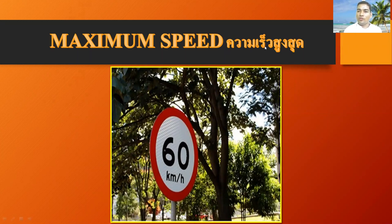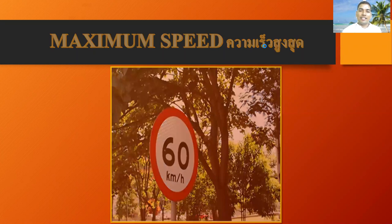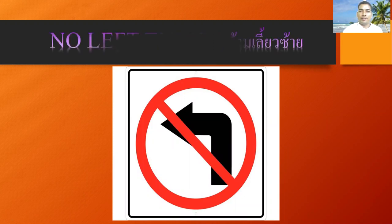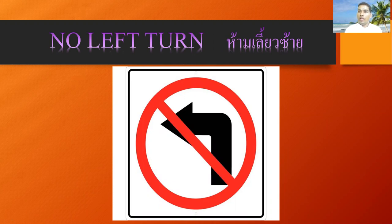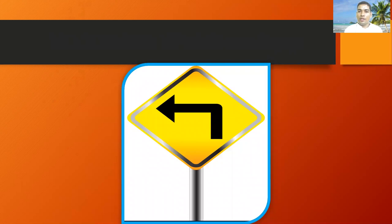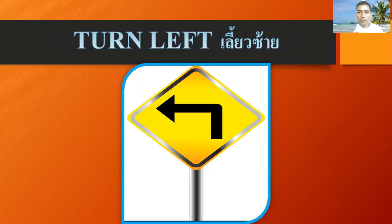Next, what sign is this? This sign is showing about no left turn. If you see this type of sign on the road, you must understand it means no left turn. Next, what sign is this? If you see this type of sign, you must understand it is showing about turn left — this sign means turn left.